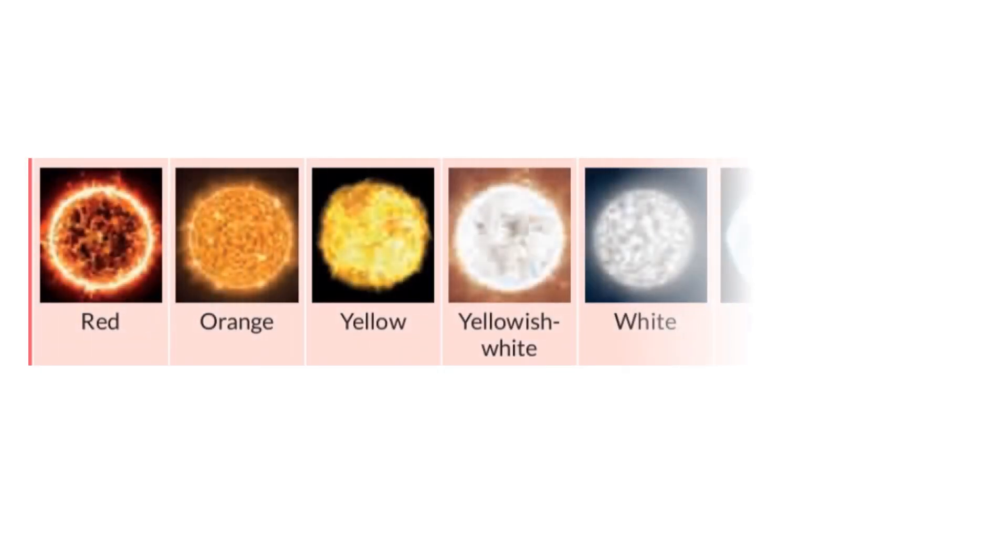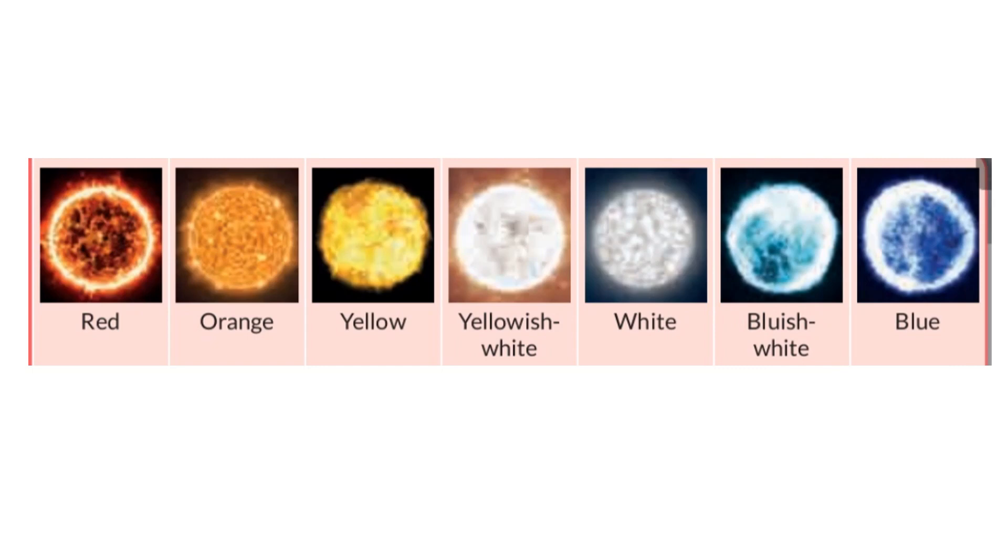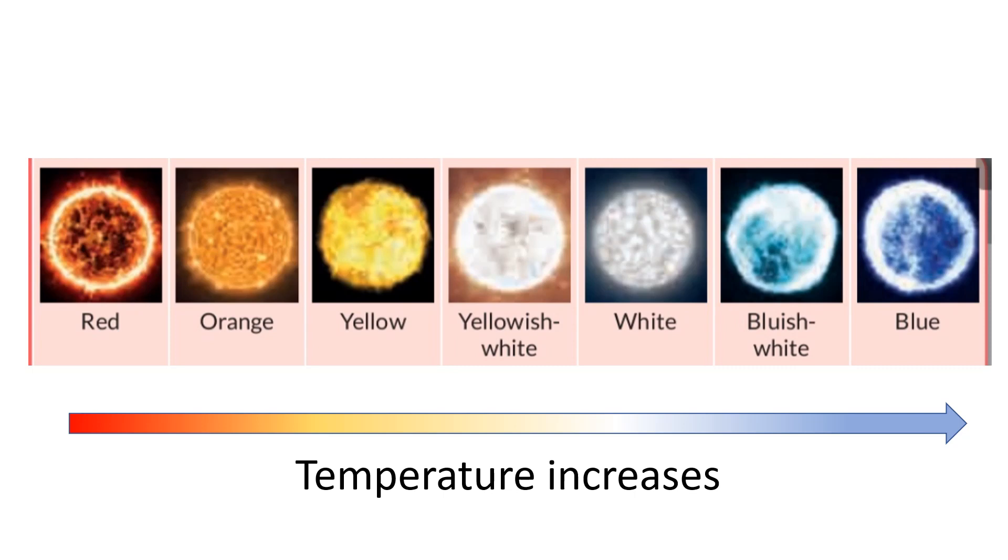Colors of stars are red, orange, yellow, yellowish white, white, bluish white and blue. There is a relationship between color and surface temperature of stars. From red color to blue color, temperature of the surface increases.